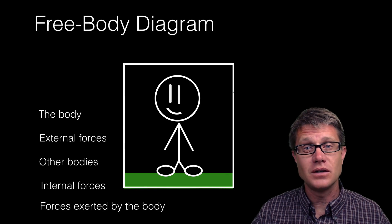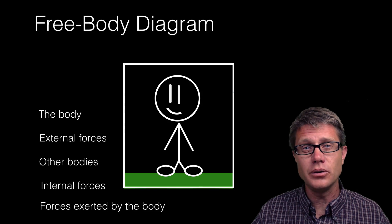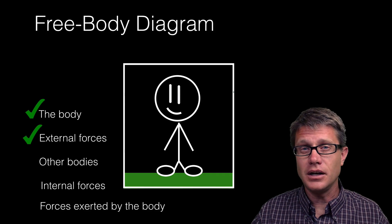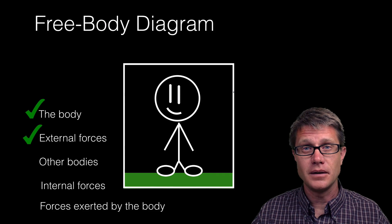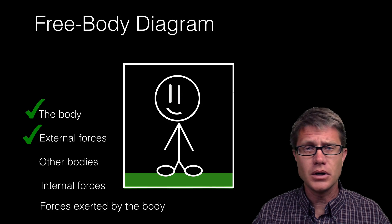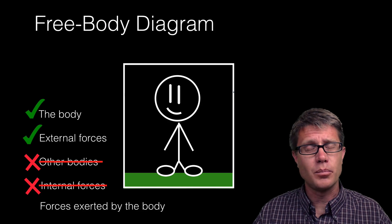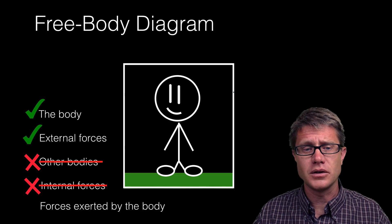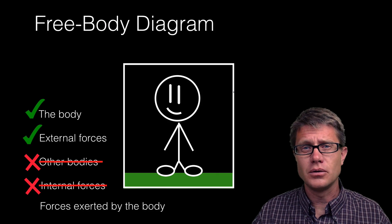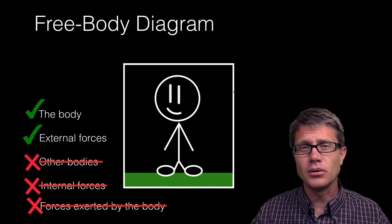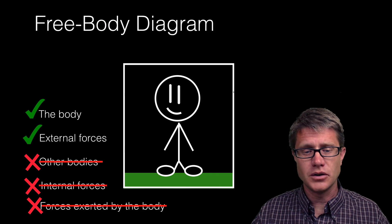We use a free body diagram to figure that out, and this is the first time we have used free body diagrams. What do you include? The body, and any external forces on that body. More importantly, what you do not include: any other bodies, no internal forces such as pushing on yourself or parts of an object pushing on other parts, and you do not include any forces exerted by that body. That last one is the mistake students tend to make.